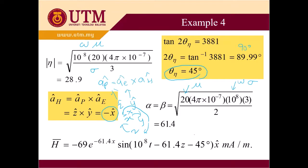Put everything inside the formula or expression. We got H = -69e^(-61.4) sin(10^8 t - 61.4z - 45°) x̂ mA/m. Because we have minus X here, so you put minus milli ampere per meter.